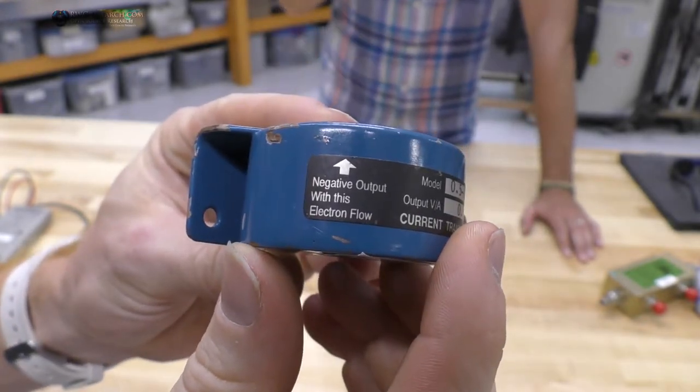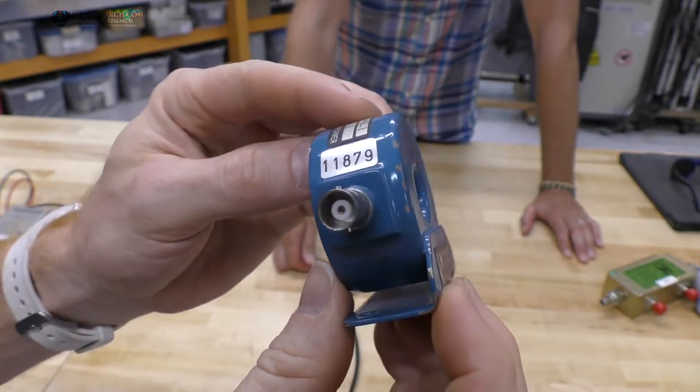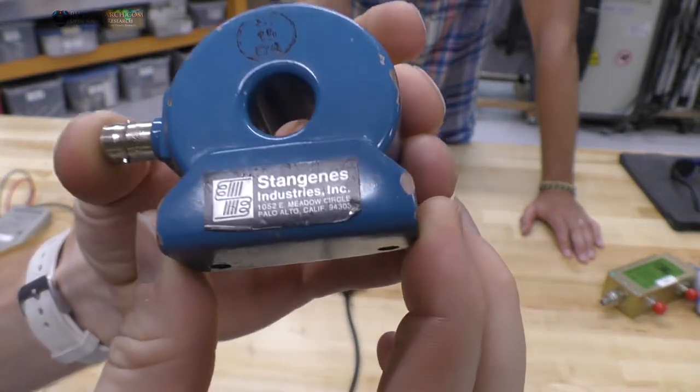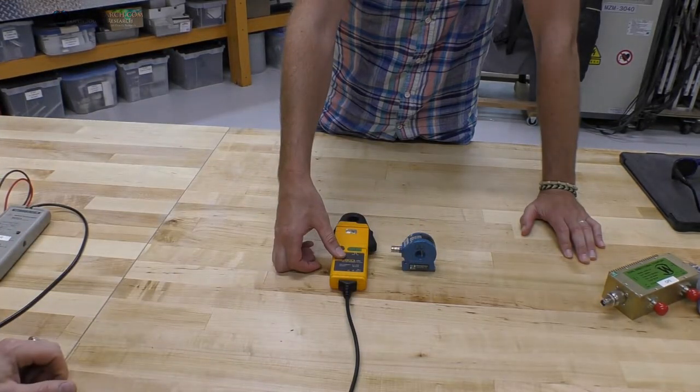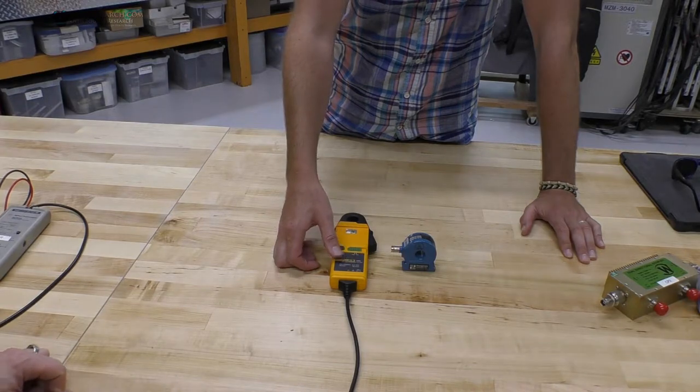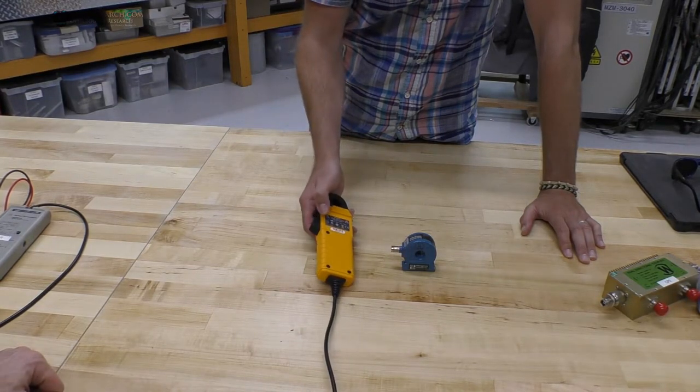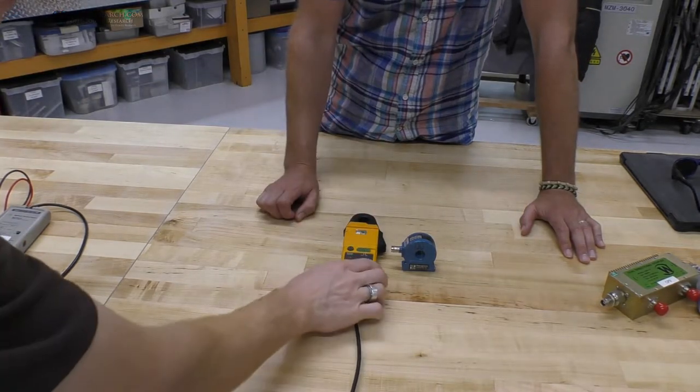So a more cost-effective probe is the Fluke unit, this is the Fluke I30S, and this will do up to 20 amps RMS, so 10 to 1 probe, and I think the frequency is up to about 10 kilohertz or so.